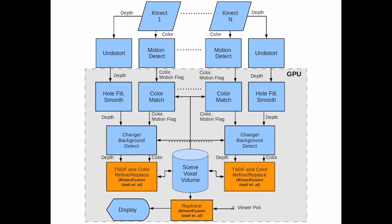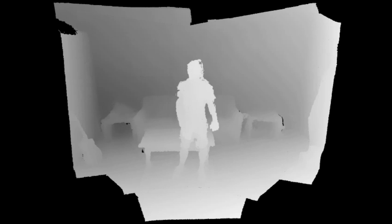After this processing, we integrate data between cameras using a modification of the KinectFusion method. Scene change detection information and a background model are used to decide if data should be discarded or accumulated, and whether data should be retained in the presence of missing data or occlusions.